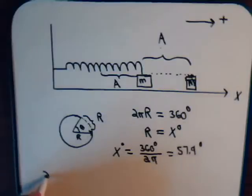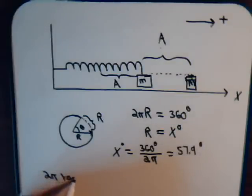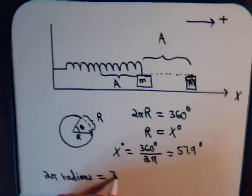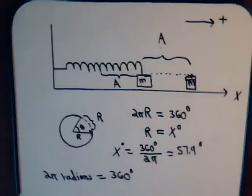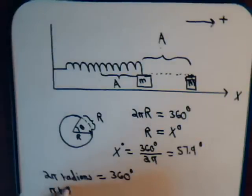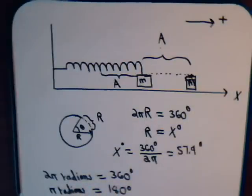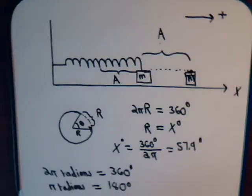So clearly, 2 pi radians equals 360 degrees, or pi radians equals 180 degrees. We briefly review what radians are because they do come up when we are discussing phasors, and we will use this later on.